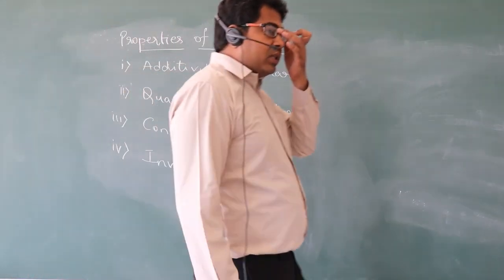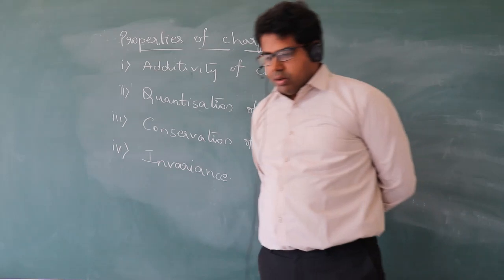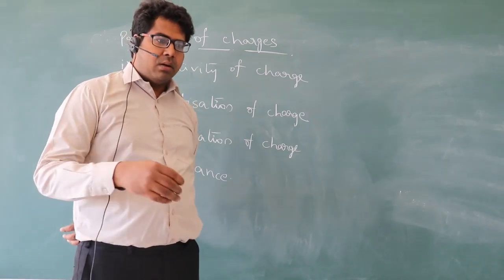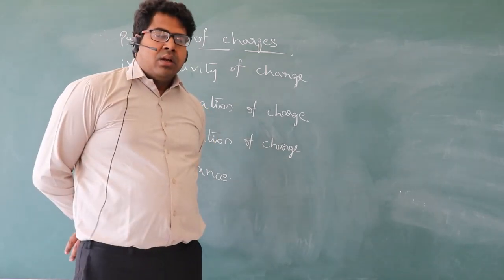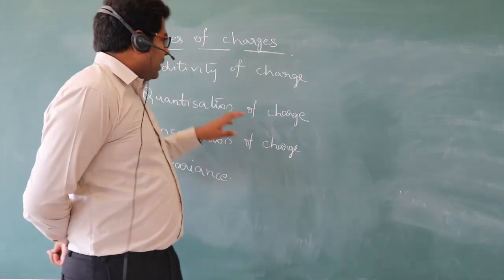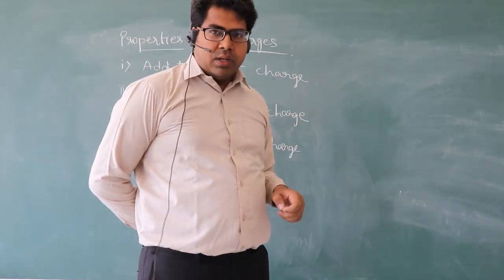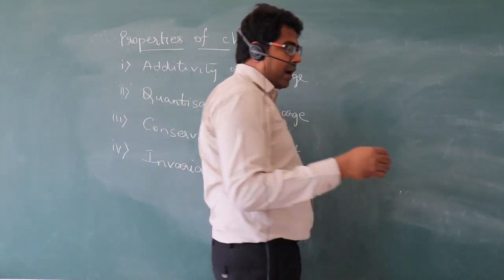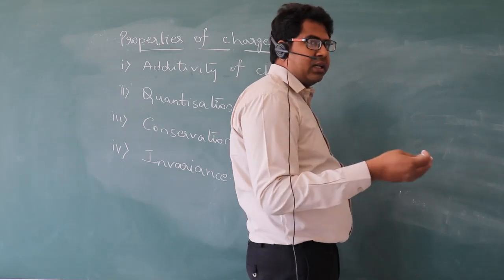Let us discuss about additivity of charge. Generally, measurable quantities can be classified into two types — scalar and vector — based on values and direction. Charge is a scalar physical quantity. Hence, the net charge of any system can be obtained by adding all the charges. Addition can be done in two ways: algebraic and normal sum. Additivity of charge states that the net charge on any body is equal to the algebraic sum of all the charges present on that body.